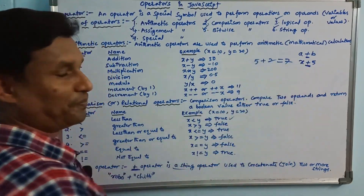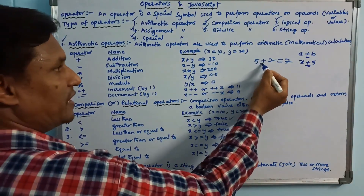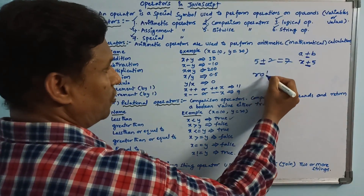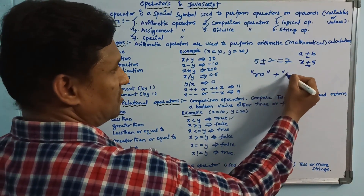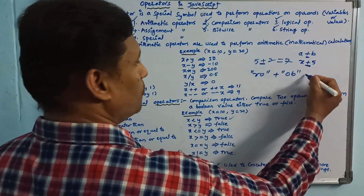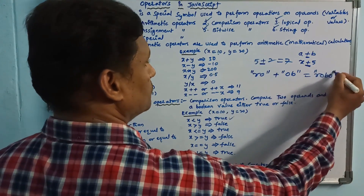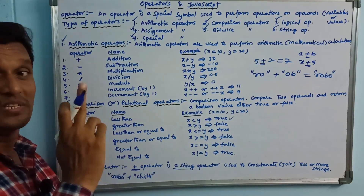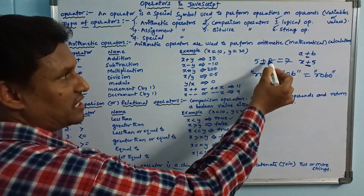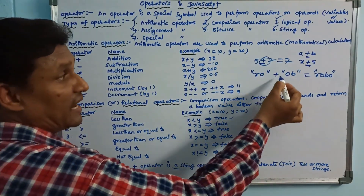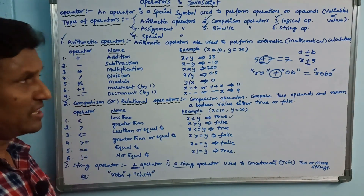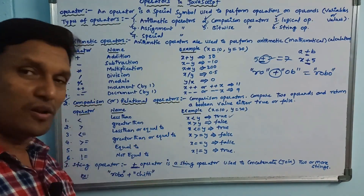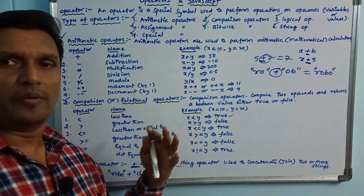For example, 5 plus 2 gives 7 when both are numbers. But if one value is a string, the plus operator acts as a string operator — for example, 'ro' plus 'ob' concatenates to give 'roob'. So when two string operands are used, the plus operator joins them. In the next video, we will talk about the remaining operators.